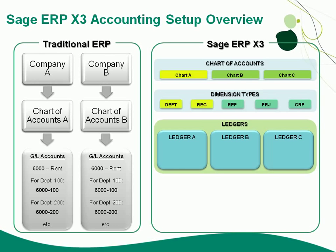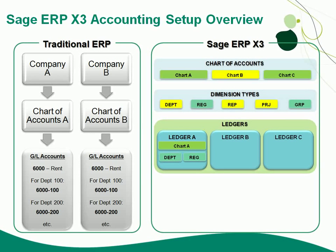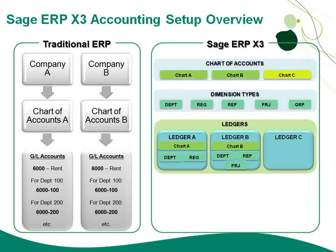We can have as many ledgers as we want. The ledgers allow us to combine the specific chart of accounts and the specific dimension types we want to use in that particular ledger. For example, for ledger A, I'd use chart A with a department code and a region code. For ledger B, I'd use chart B with different dimension types — perhaps department, sales rep, and project. For ledger C, I may not want to track any analytical information, so I won't specify any dimensions — just chart C.